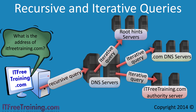You can see that the whole process took four queries: one recursive query to the desktop's DNS server, a second one to the root hints server, a third to a dot com server, and a fourth to the ITFreeTraining authority DNS server.